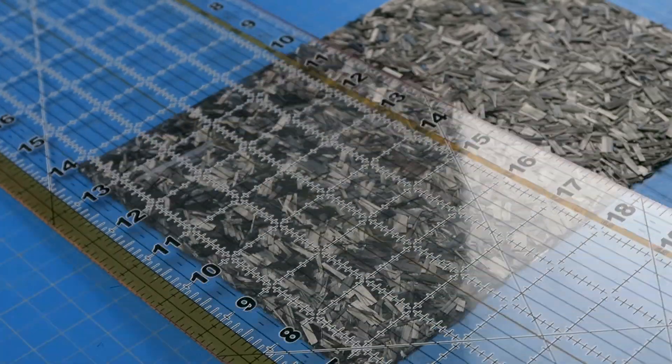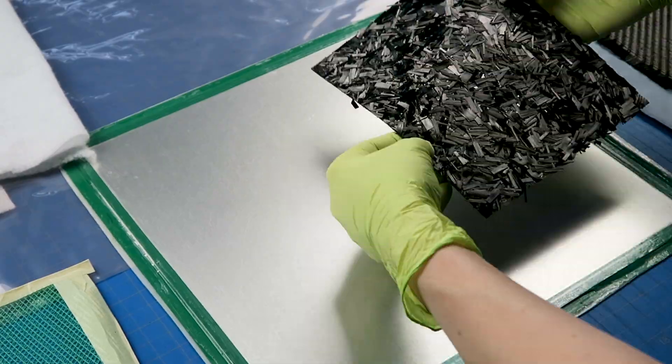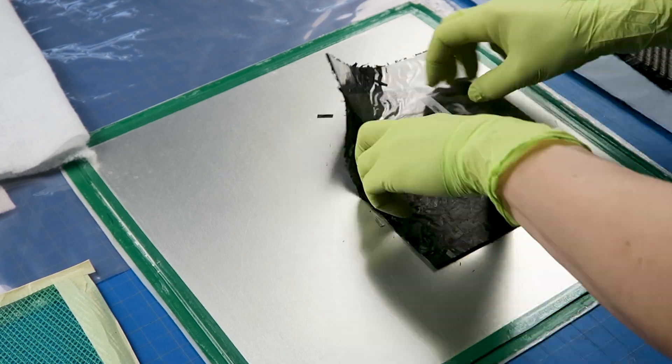The fabric is convenient in that you can just cut it to size and then you just remove that plastic backing before you place it into your mold or whatever project that you're doing.